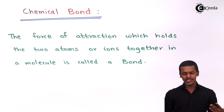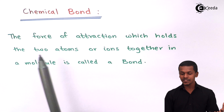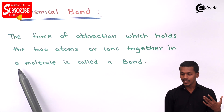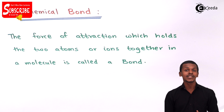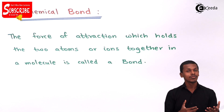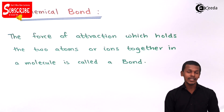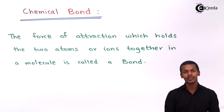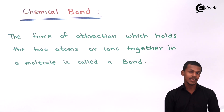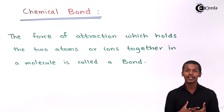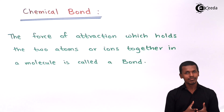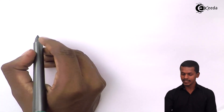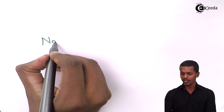Chemical bond is nothing but the force of attraction which holds the two atoms or ions together in a molecule. It is formed because of the two electrons that are present between the two atoms. For example, if I talk about NaCl — the common example.